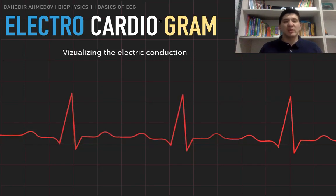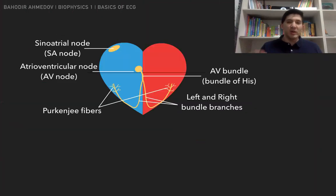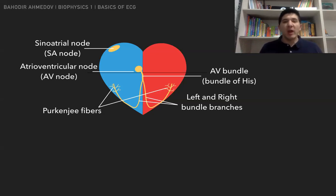Throughout this lecture, we're going to try to understand what every single wave inside these figures means. In order to start, we need to look at the anatomy of the heart first. Previously, we talked about the anatomy of the heart from the ECG perspective — from the perspective of electric conduction.